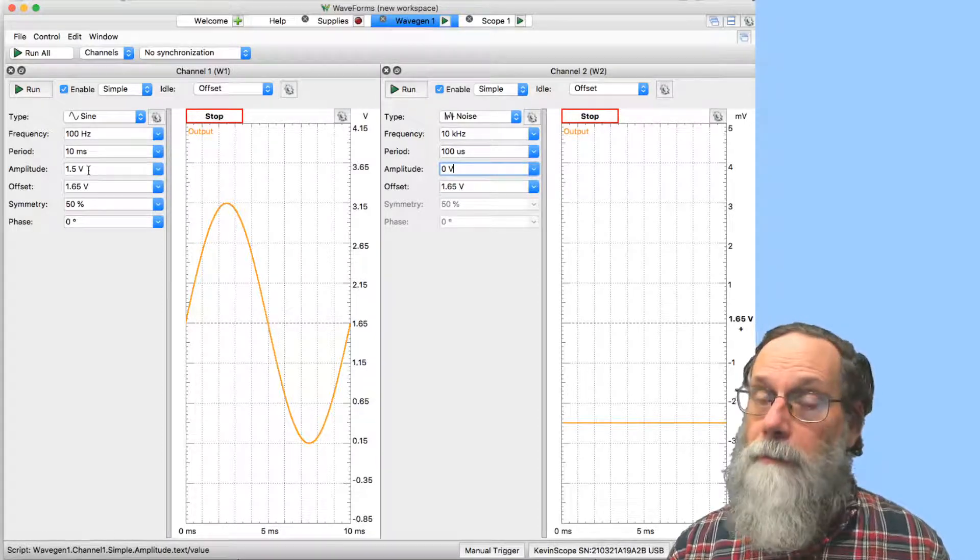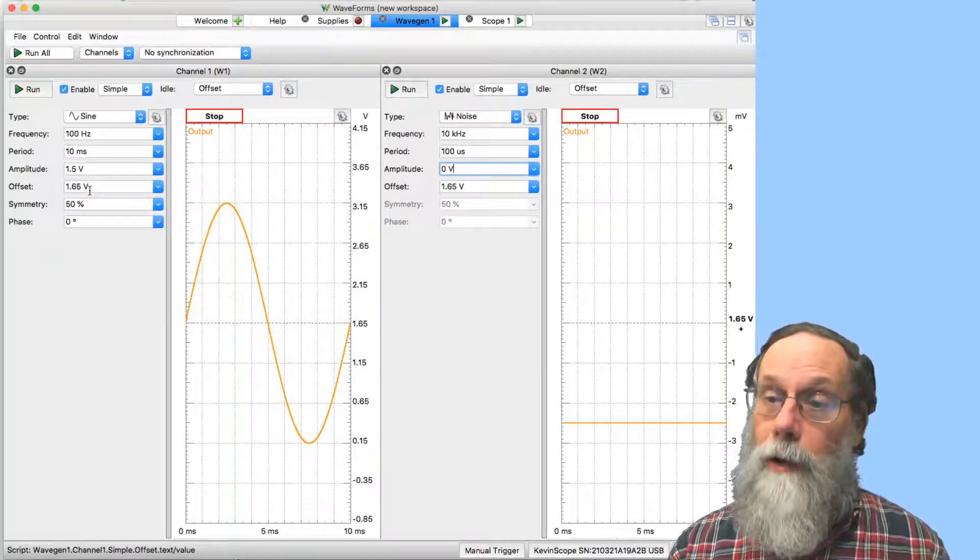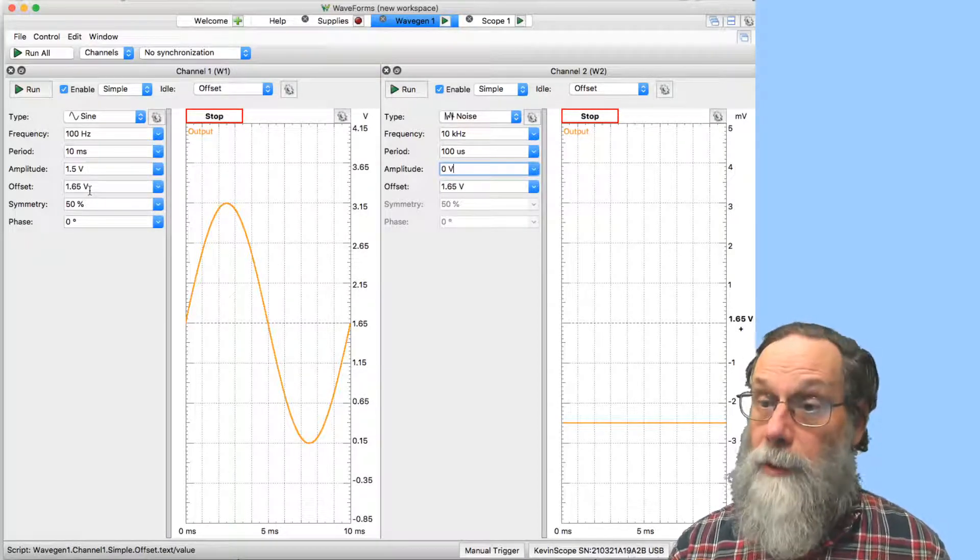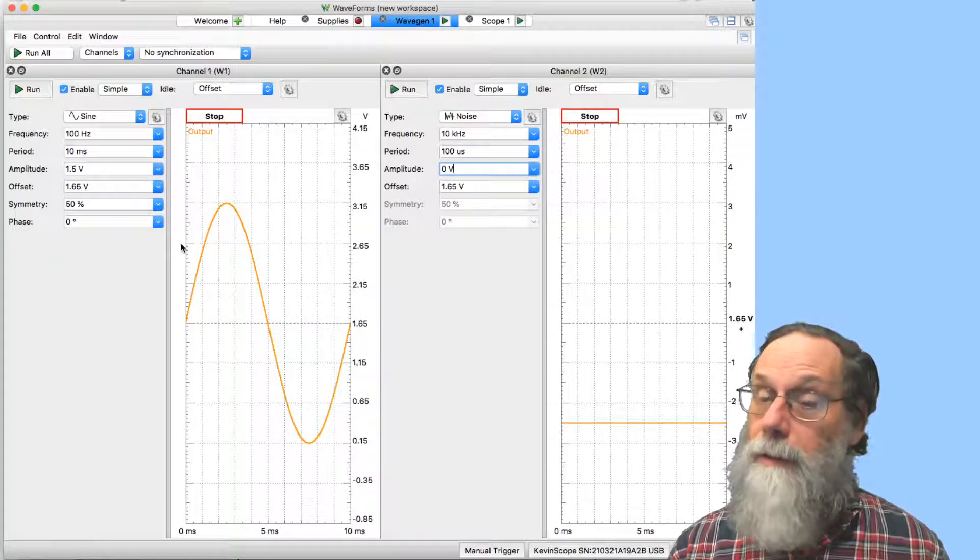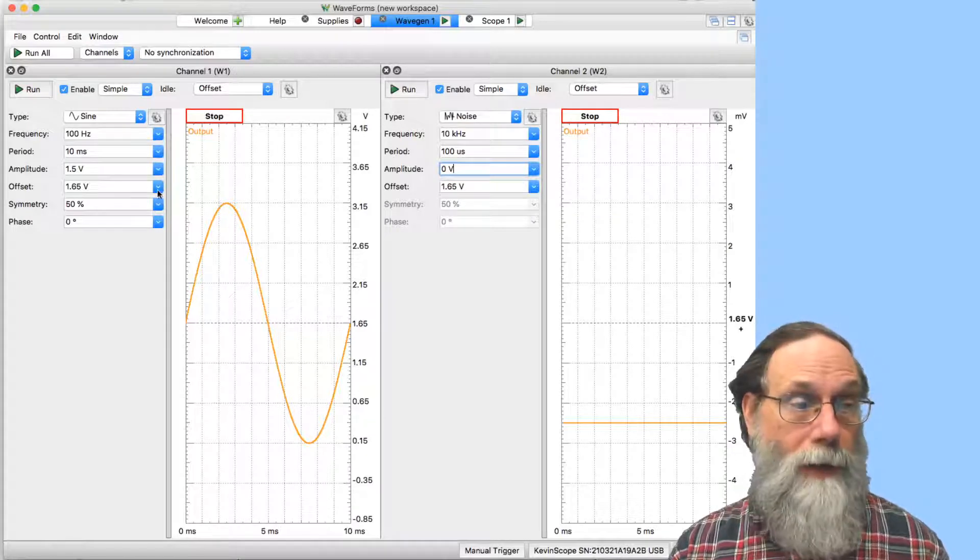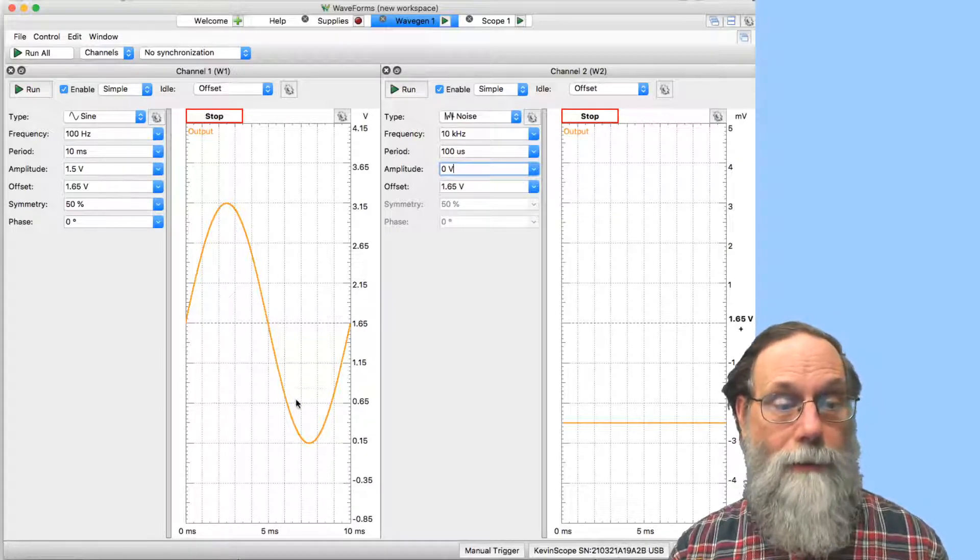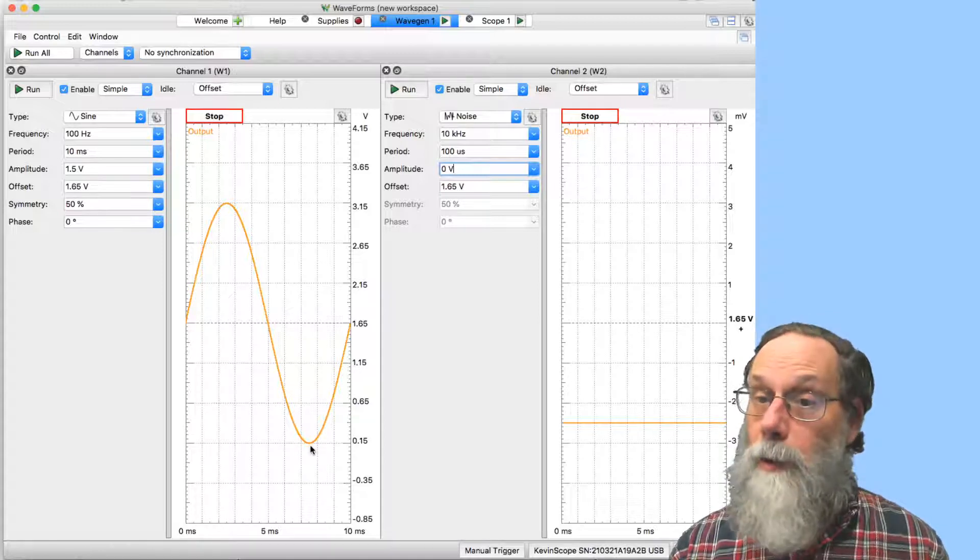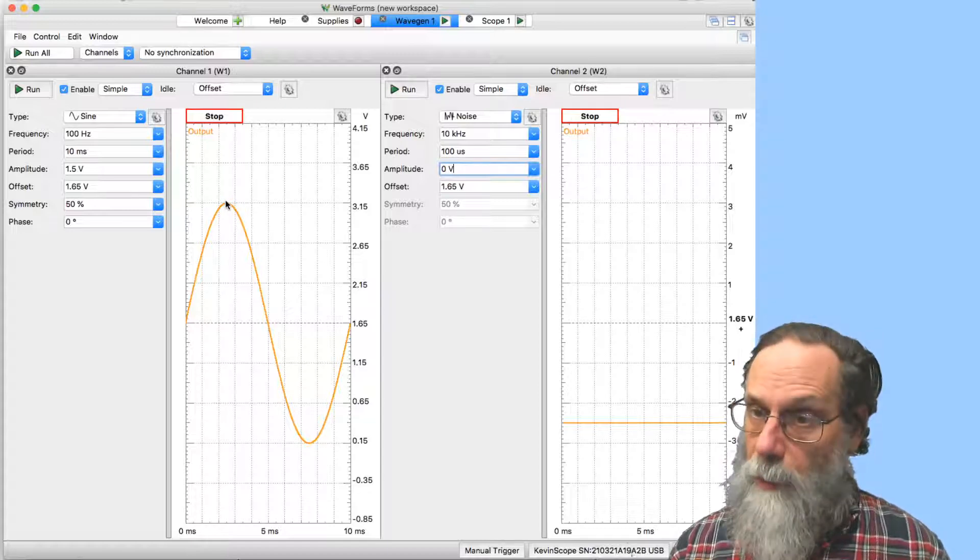The amplitude I've made 1.5 volts and the offset 1.65 volts. The offset here is half the power supply voltage, so that I can go above and below it and not hit the lower or upper power rail. That's why the 1.5 volts and 1.65 volts takes me from 0.15 volts as my low voltage up to 3.15 volts as my high voltage on channel 1.